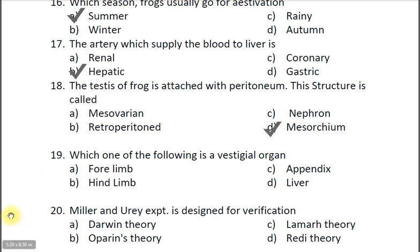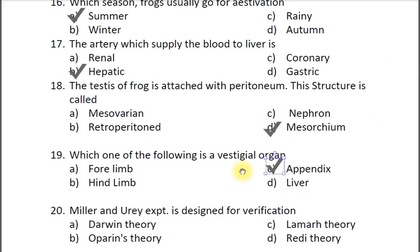Question nineteen: Which one of the following is a vestigial organ? A forelimb, B hindlimb, C appendix, D liver. The correct answer is C appendix. The appendix is the distal portion of the large intestine. It is a vestigial organ because it has no known function; if removed in infancy the individual survives and lives a normal life.